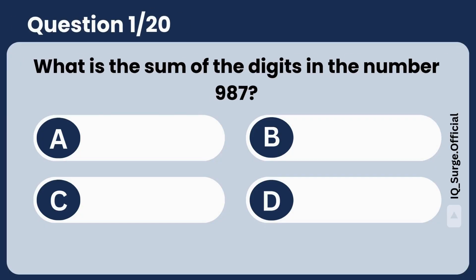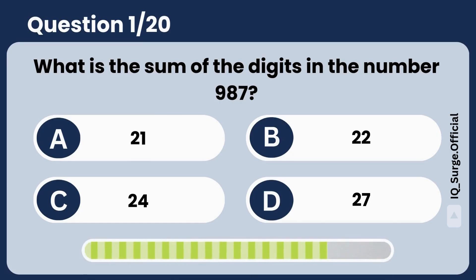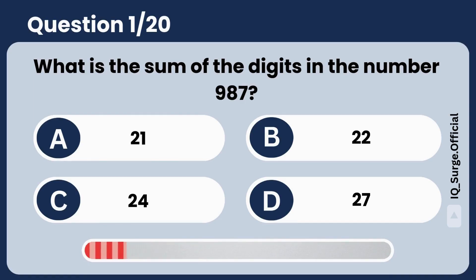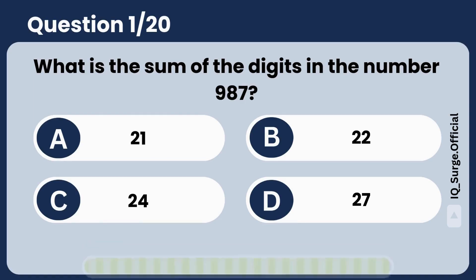What is the sum of the digits in the number 987? Answer: 24. Great start.